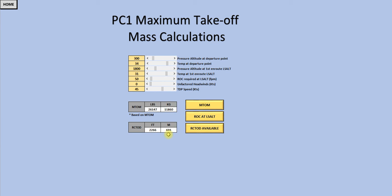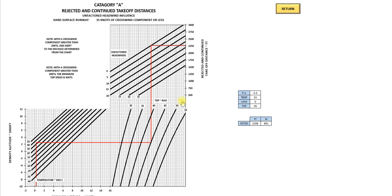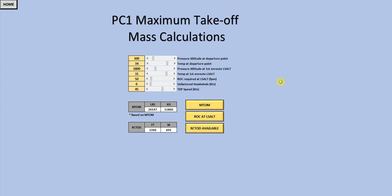The projected continued takeoff distance is 691 meters in this case. You can see here unfactored headwinds of zero, TDP of 45, temperature 34 degrees and 300 feet pressure altitude — so 300 feet and up to 34 degrees — and that gives you your projected continued takeoff distance. This is just more of a fun way to look at how the environment affects the performance of your aircraft. You can put in a whole lot of different numbers and see what sort of weight limitations you have for those conditions.